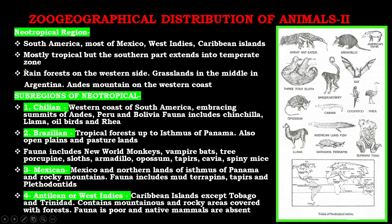The next region is the Neotropical region. It includes South America, most of Mexico, the West Indies, and Caribbean islands. It is mostly tropical, but the southern part extends into the temperate zone. There are rainforests on the western side, grasslands in the middle in Argentina, and the Andes mountains on the western coast. It is divided into sub-regions, beginning with number one, the Chilean sub-region.